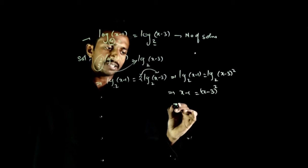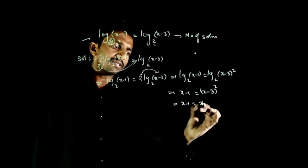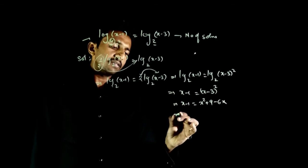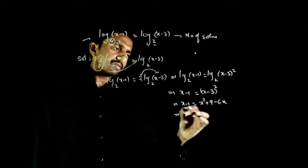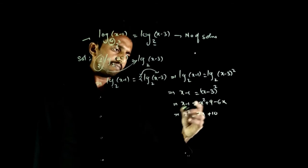Quadratic equation. Let us solve this: x-1 = x² + 9 - 6x. This implies x² - 7x + 10 = 0.